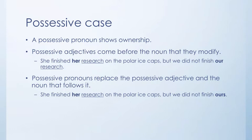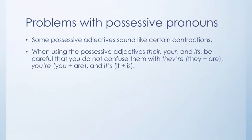The possessive case: possessive pronouns show ownership. Possessive adjectives come before the noun that they modify. For example, she finished her research on the polar ice caps, but we did not finish our research. Possessive pronouns replace the possessive adjective and the noun that follows it: she finished her research on the polar ice caps, but we did not finish ours — where ours is in place of our research. Be careful: some possessive adjectives sound like contractions, so watch their versus they are, your versus you are, and its versus it is.